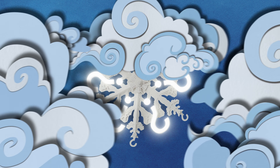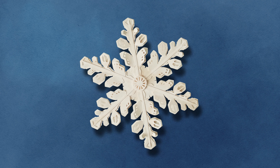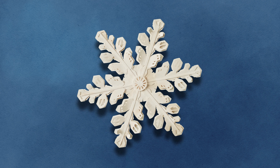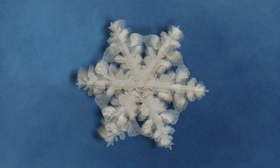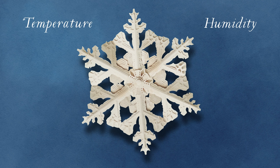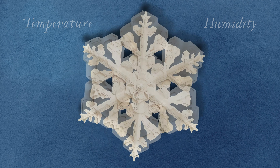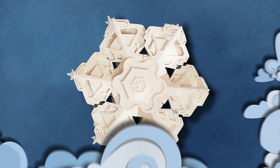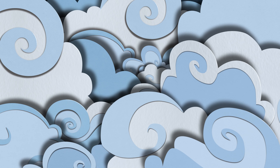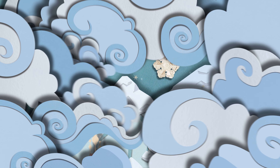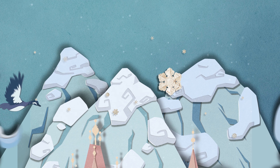Let's start at the beginning. What is a snowflake, or to use its more technical name, a snow crystal? A snow crystal forms up in the clouds, when water vapour meets little specks of dust or pollen. This forms its tiny hexagonal heart.